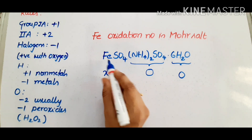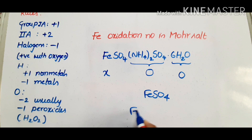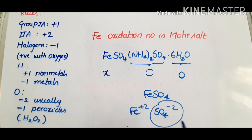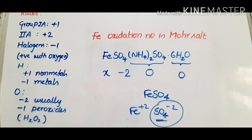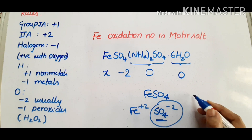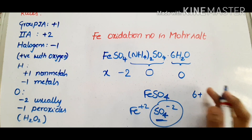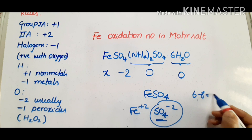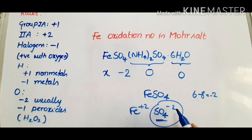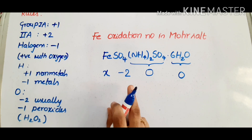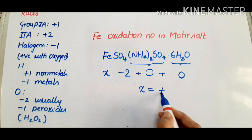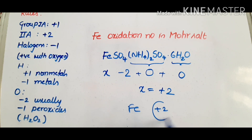Here you can see SO4 carries a minus 2 charge. In FeSO4, iron is Fe²⁺ and SO4 is 2 minus. Suppose sulfur is plus 6, and 4 times minus 2 gives minus 8, so 6 minus 8 equals minus 2. So the net charge of SO4 is minus 2. Therefore x equals plus 2 — iron is in the plus 2 oxidation state in Mohr's salt.